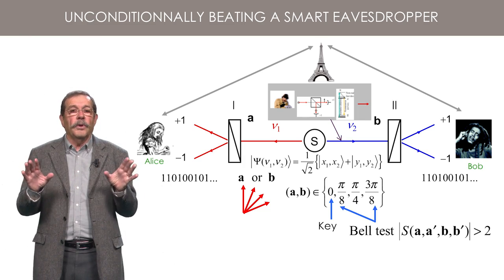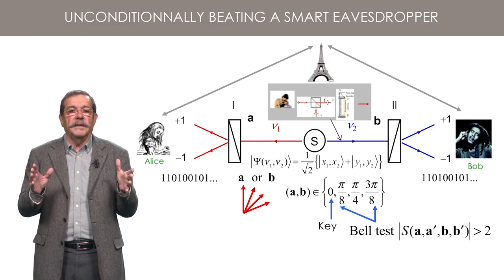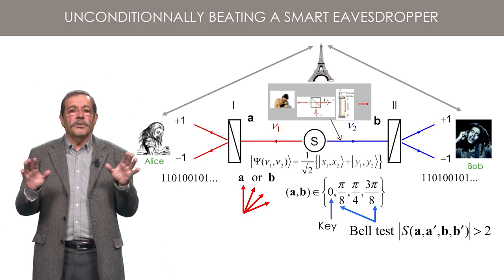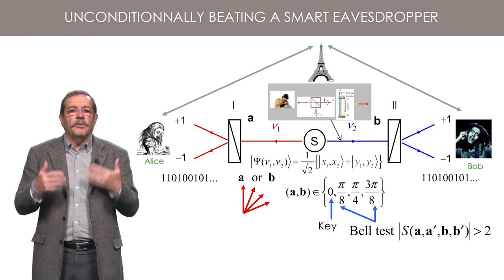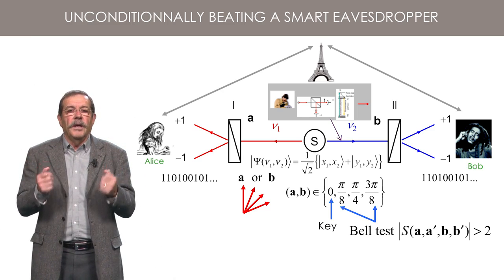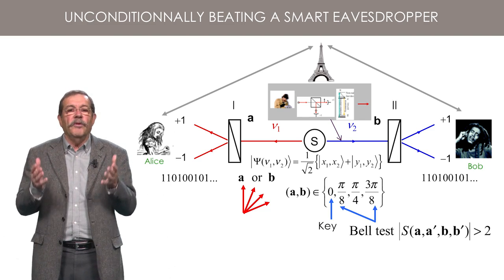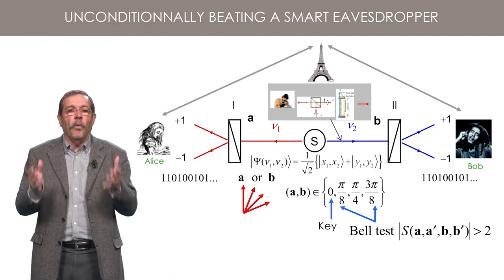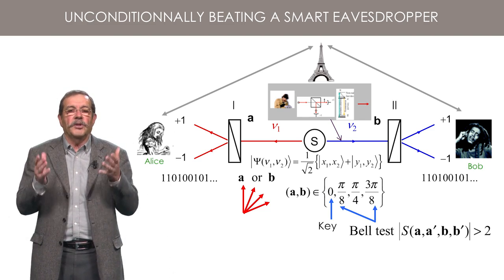Then the correlation observed by Alice and Bob must obey Bell's inequality. I will not demonstrate it, but I can tell you that in the state resulting from the action of the eavesdropper, the quantum correlations predicted for Alice and Bob assume a form analogous to the one written for any local hidden variable model.